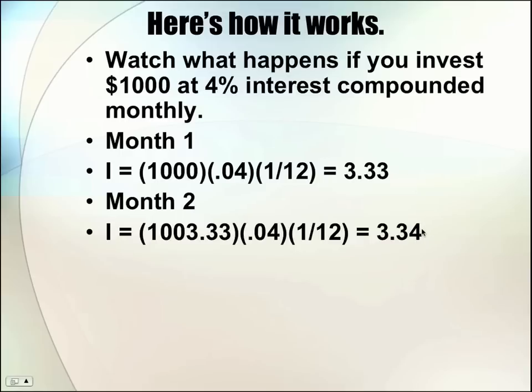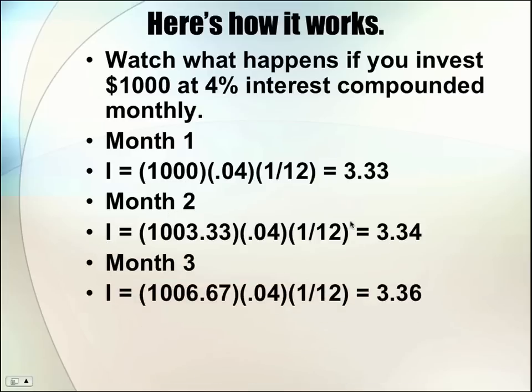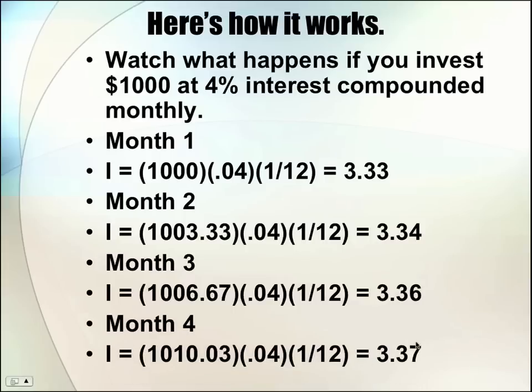Now this would continue on in month 3. So we add the $3.34 to the $1,003.33. And so now our principal balance is $1,006.67. And so you can see our interest is even greater now, $3.36. So as we keep compounding, here's month 4, we can see we make more and more every time.